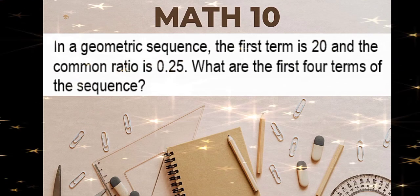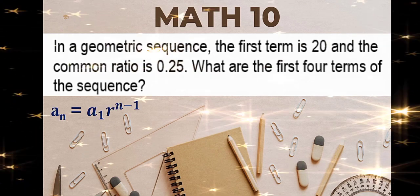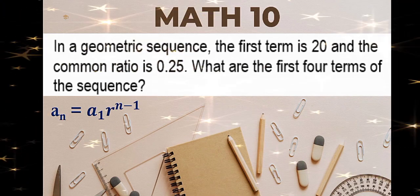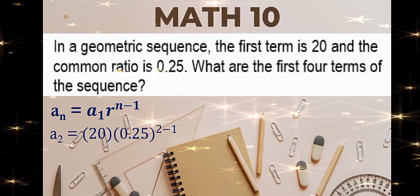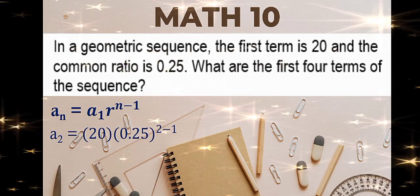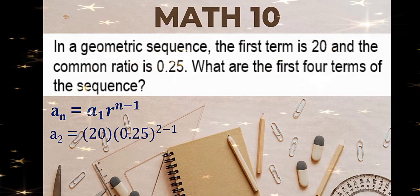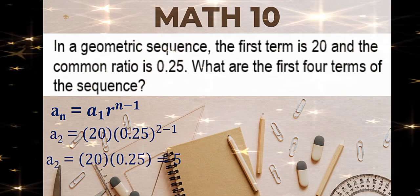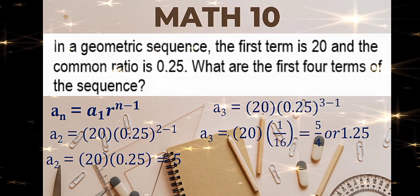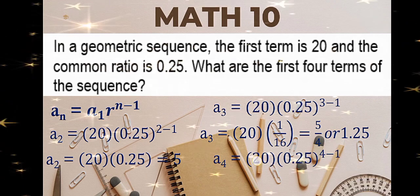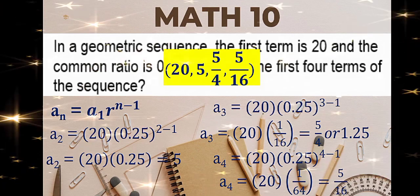In a geometric sequence, the first term is 20 and the common ratio is 0.25. What are the first four terms? Using the formula of geometric sequence, with n equal to 2: look for the second term, third term, and fourth term. Second term: n is 2, first term is 20, ratio is 0.25 — simplify to get 5. Third term: same process, simplify to get 1.25. And the last term: same formula to get 5/16. Therefore, the first four terms are 20, 5, 5/4, and 5/16.